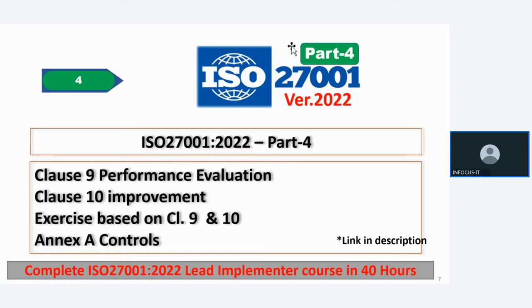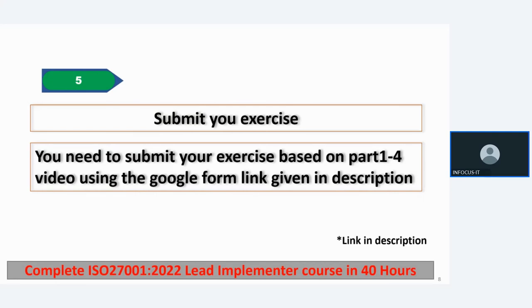This completes the total Lead Implementer course in 40 hours, divided into 4 parts with 4 separate videos. You have to go through all 4 videos — do not skip any part. If you skip any part, you won't gain the full understanding of what is covered. Go through them systematically, one by one. The course hours are already reduced, and if you really want to learn, you have to go through the whole content. Once you complete all 4 videos and submit the exercises alongside them — just as you submitted exercises for Part 1, do the same for parts 2, 3, and 4 — submit all exercises using the Google Form link in the description.